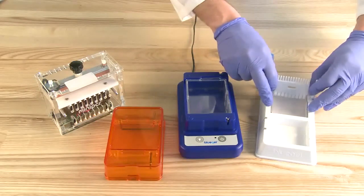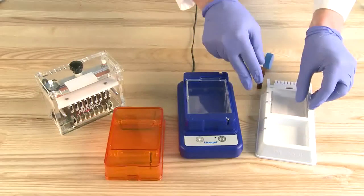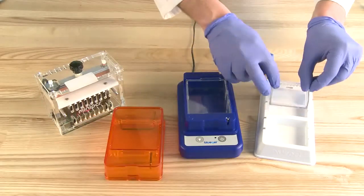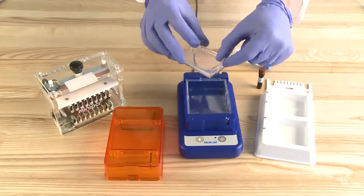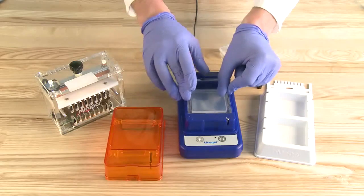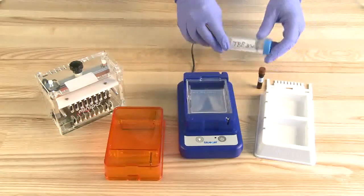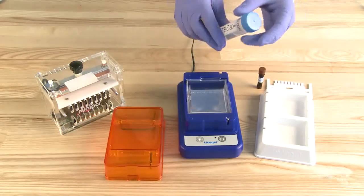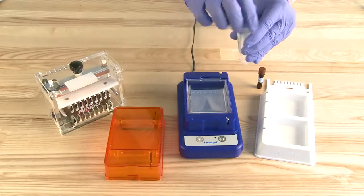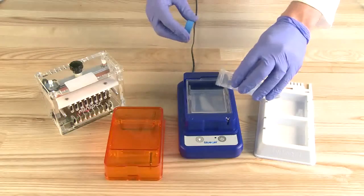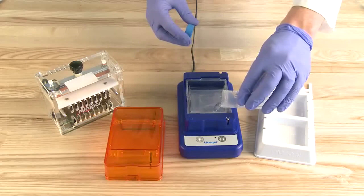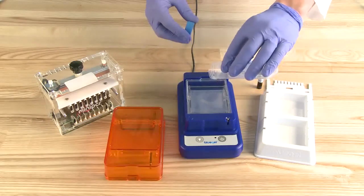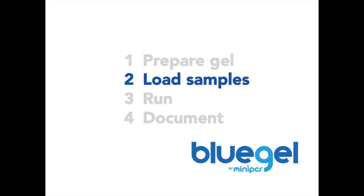Ensure the clear buffer chamber is placed in the blue base. Now transfer the gel tray to the buffer chamber. Make sure the notches on the outside of the gel tray align with the ones in the buffer chamber. Add 30 milliliters of running buffer into the buffer chamber. The gel should be completely submerged in buffer. Do not add more than 30 milliliters of buffer as it may overflow.